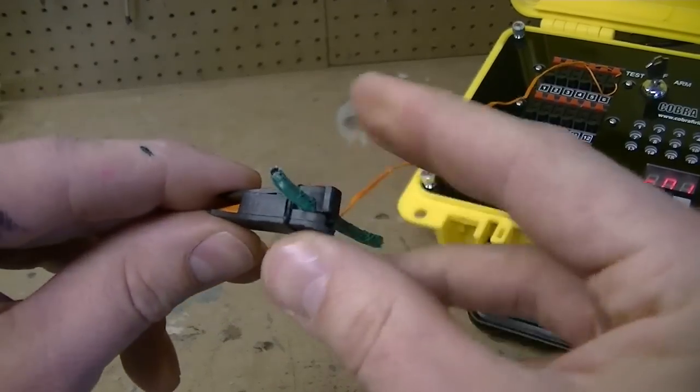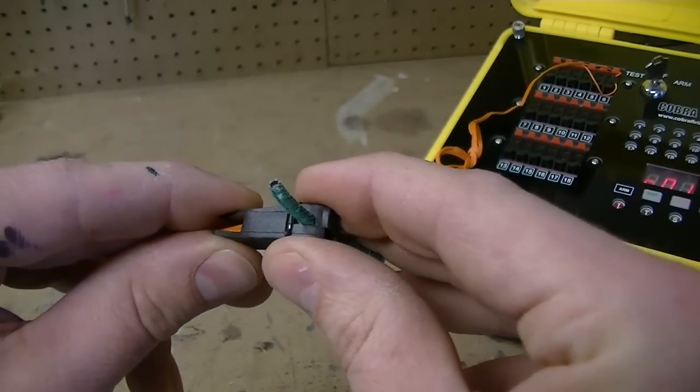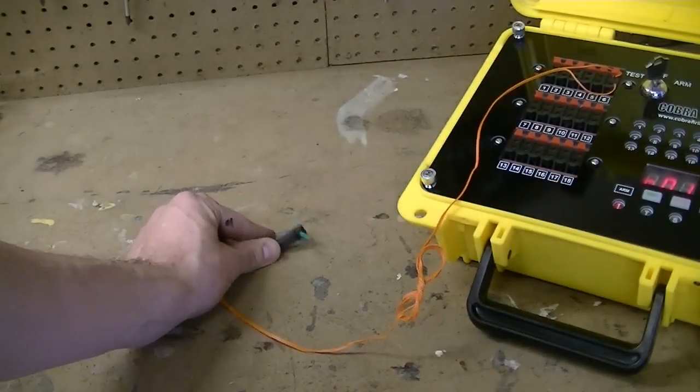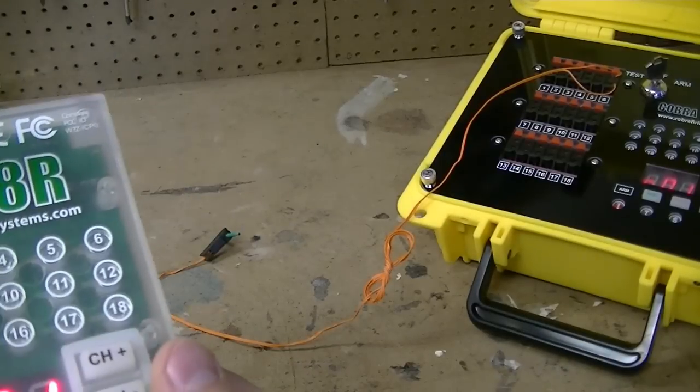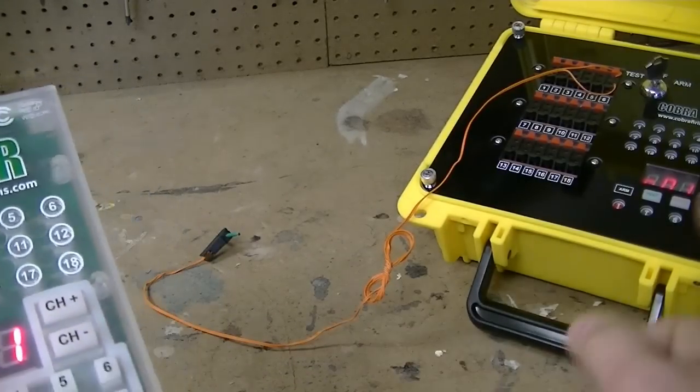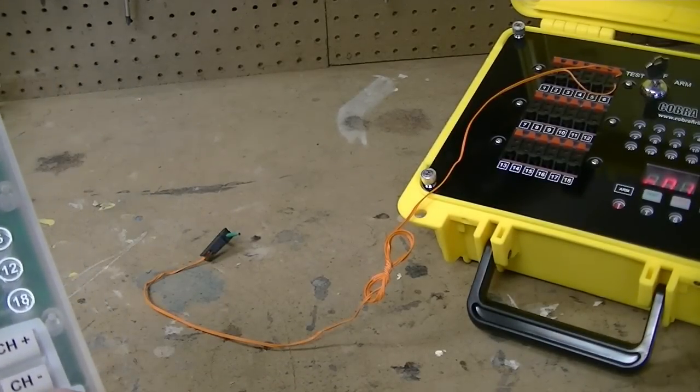Once in place, just secure and push down over the top. Then we're going to make sure the system is armed, which it is, and we're going to fire our talon igniter clip.